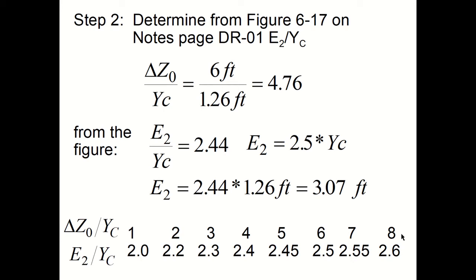Step 2 is to utilize figure 6-17 to determine the ratio of E₂ over Yc. In order to use the figure, you must compute the ratio of delta Z₀ divided by Yc. Therefore, 6 feet divided by 1.26 feet gives you 4.76. The numbers at the bottom of the slide represent what you read when you look at figure 6-17. So for delta Z₀ over Yc equals 4.76, that gives you a ratio of E₂ divided by Yc equals 2.44. So E₂ would then be 2.44 times 1.26, equal to 3.07 feet. This would be the energy of the water as it's exiting the drop structure.